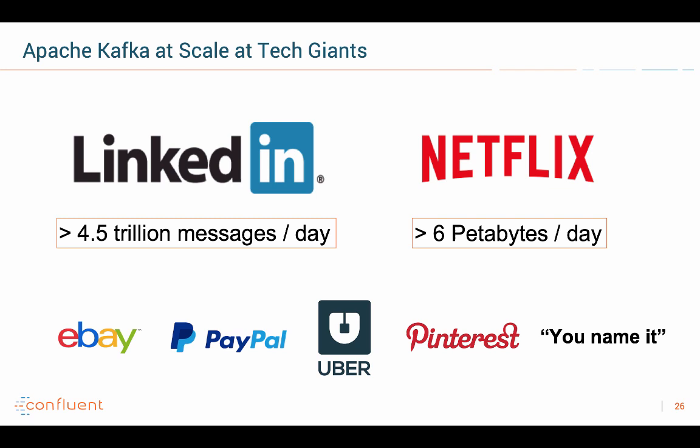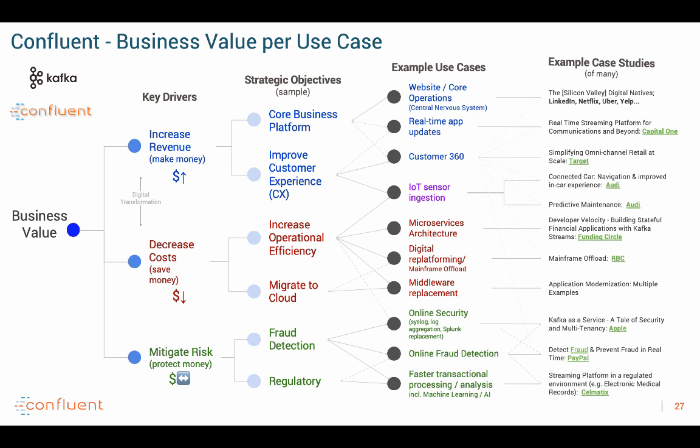Here are just a few examples for Kafka at scale — LinkedIn processes over 4 to 5 trillion messages a day with Kafka, or Netflix processes over 6 petabytes of data per day. Kafka is not just used by the tech giants — it's relevant in every company on this planet that has data to process. And also very importantly, Kafka is not just used for big data. Many use cases are about smaller critical data sets, like bank payments or transactional data, which is relevant for machines and IoT.